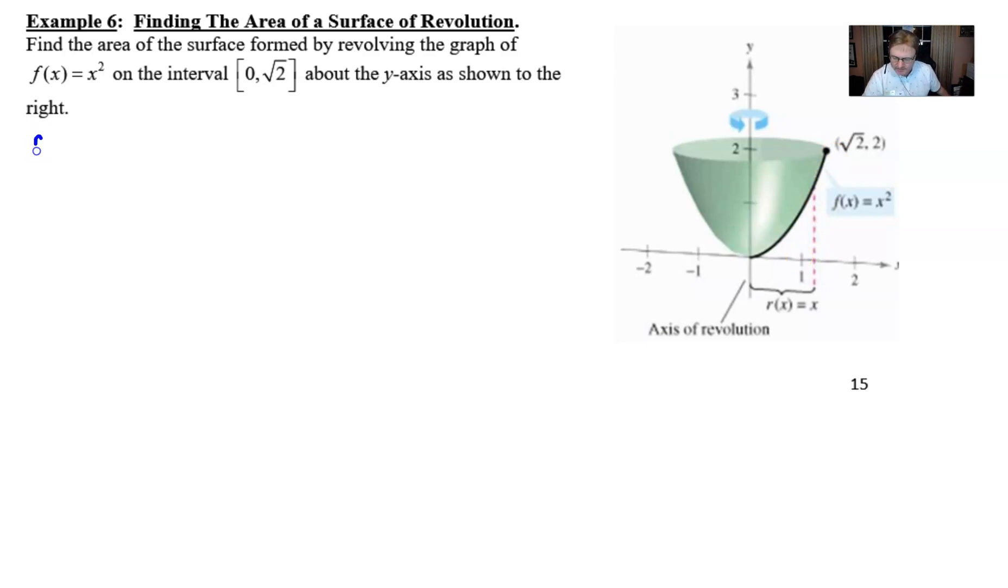So as always, I start by finding the derivative of the function that they gave me. And this one is probably the easiest one yet. The derivative of x squared is 2x. So next, we're going to go ahead and we are going to square our f prime. And if we square our f prime, that's going to give us 4x squared. So all the preliminary work is done.